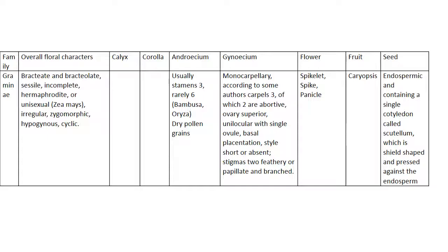The first and foremost family is Graminae. The floral characters are bractate and bracteate, sessile, incomplete, hermaphrodite or unisexual, irregular, zygomorphic, hypogynous, cyclic — these are the inflorescence characters.